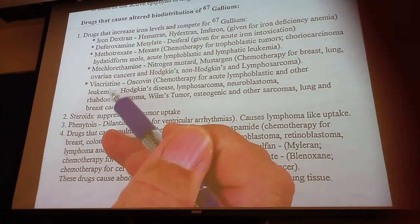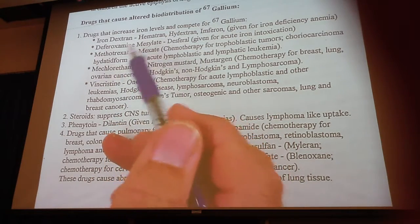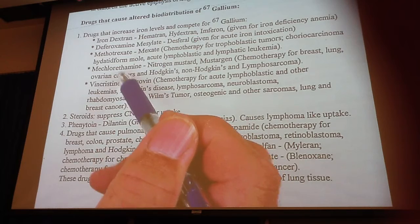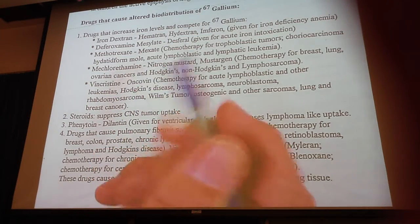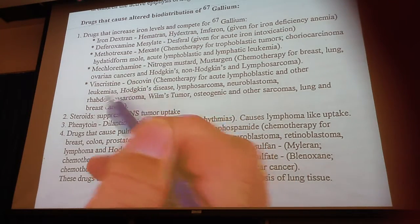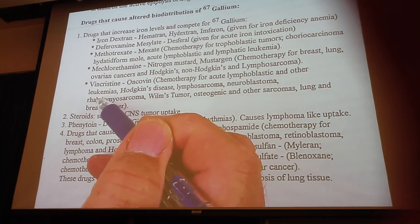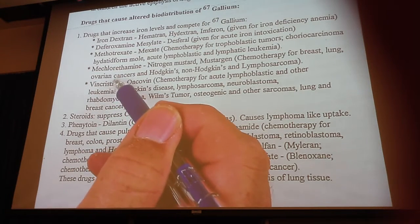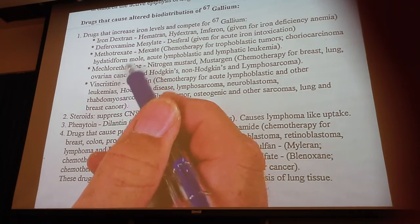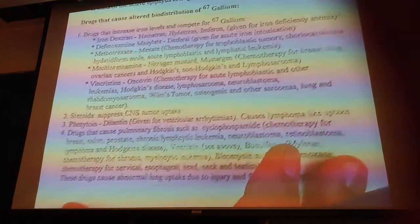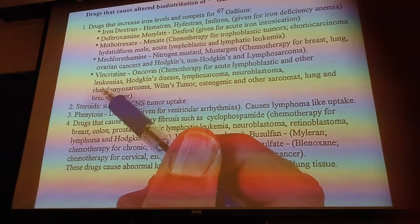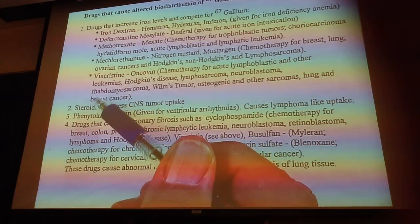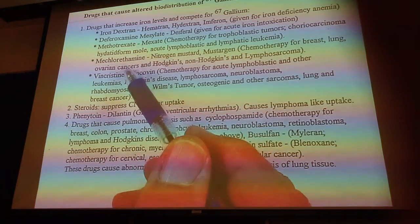Mostly the chemotherapy agents — like methotrexate, mechlorethamine, and vincristine — are all transported via transferrin to the cancer sites. So anything that takes up your transferrin binding sites is going to prevent the gallium from being transported to the target.